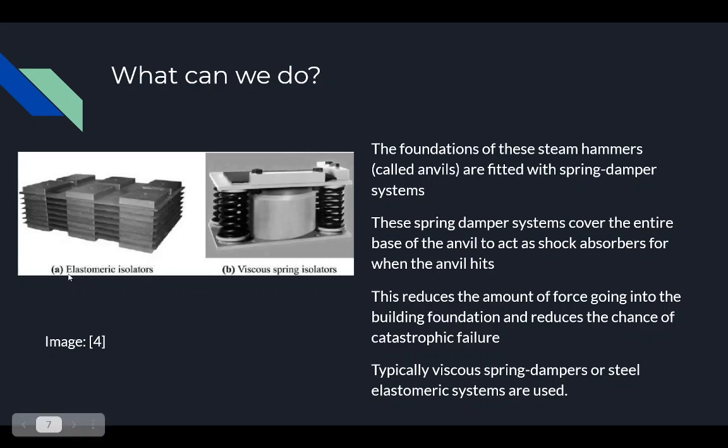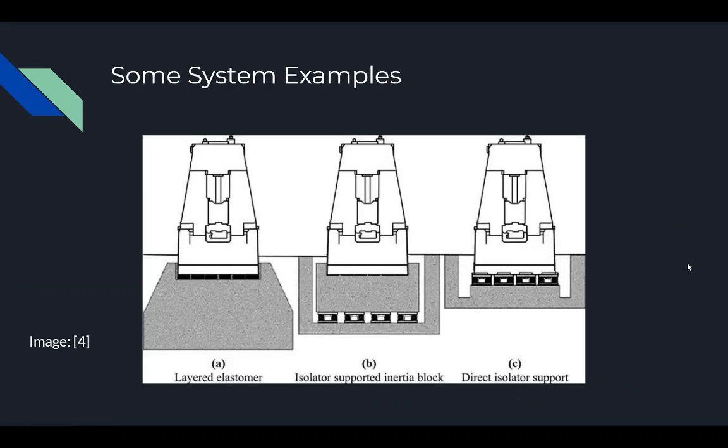Usually a device like this, like an elastomeric isolator, which is a newer device, or a more traditional viscous spring isolator. This is usually what we think of when we think of a spring mass damper. Here's some examples. You can see the steam hammer and three different setups. This is a layered elastomer. What you can see is that it doesn't require as much mass as you can see here. These two are on concrete. I'll talk about how mass affects the system.